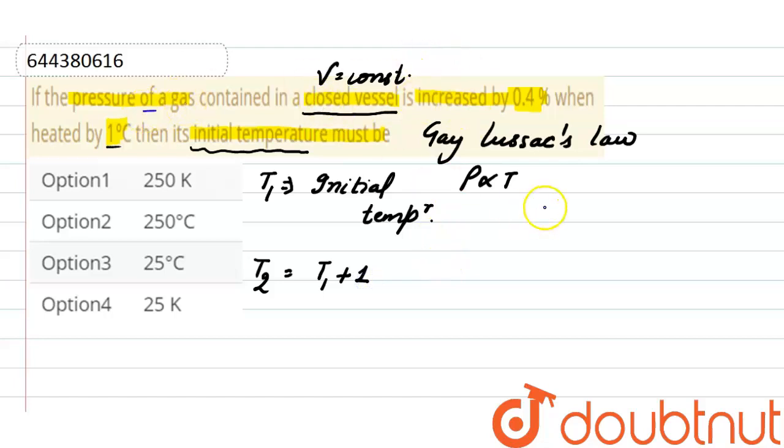Now, the initial pressure of a gas is considered as P1. This is initial pressure. And in the question given is that pressure of a gas is increased by 0.4 percent, that means final pressure of the system